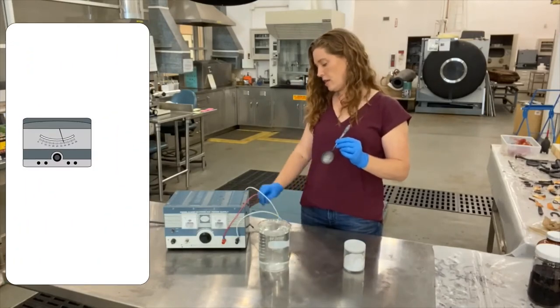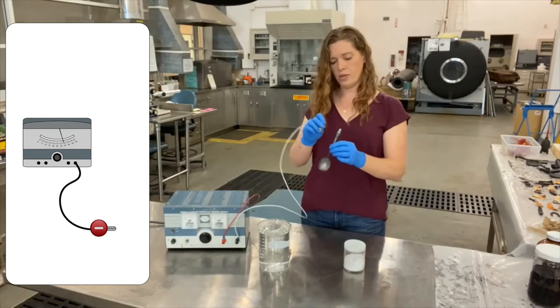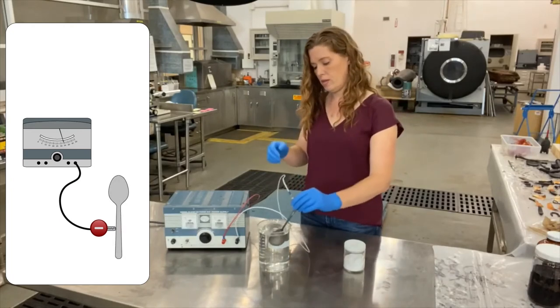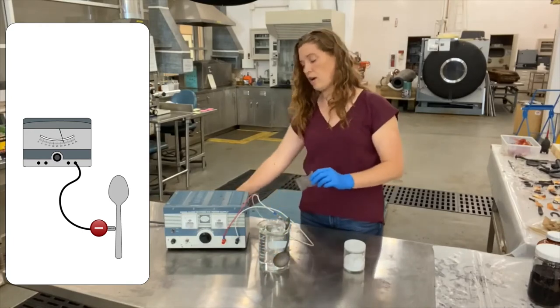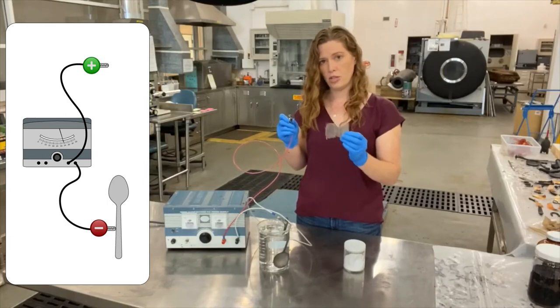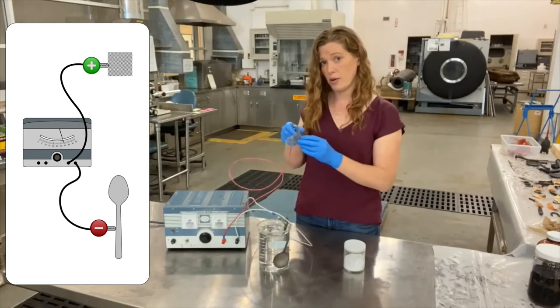Now we are going to attach the negative electrode to our positively charged spoon. Likewise we are going to take our positive electrode and attach it to a piece of stainless steel mesh. This is going to be our sacrificial anode.